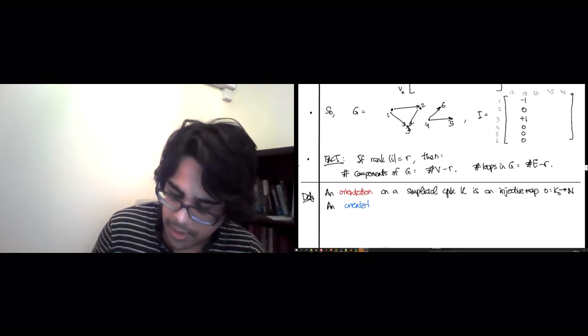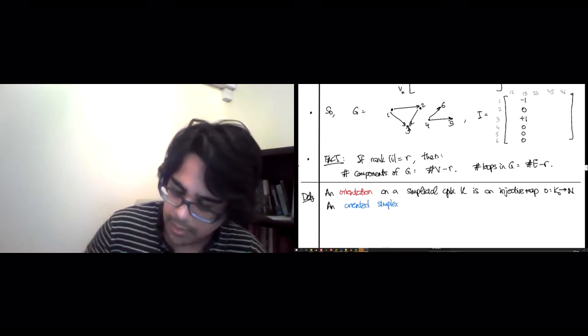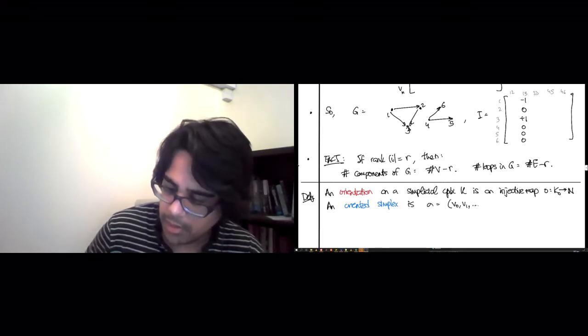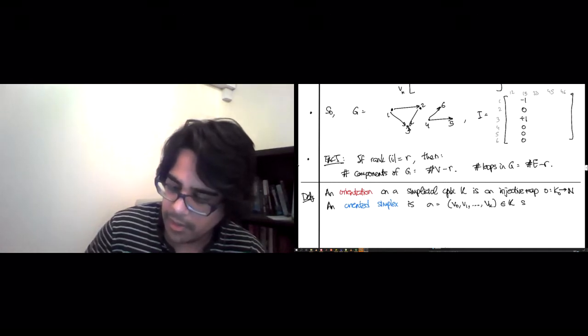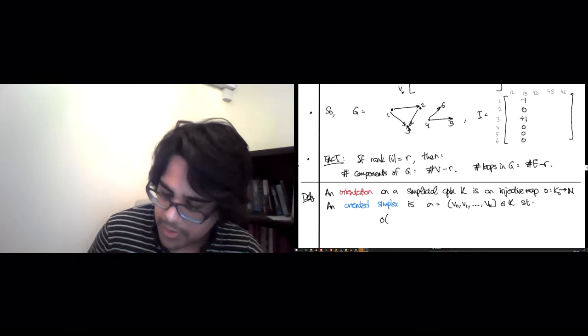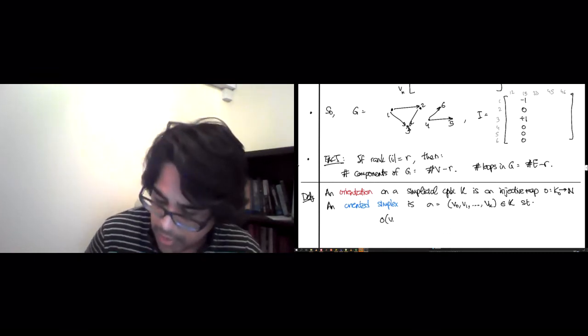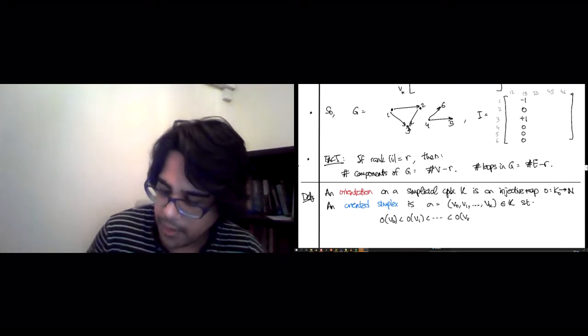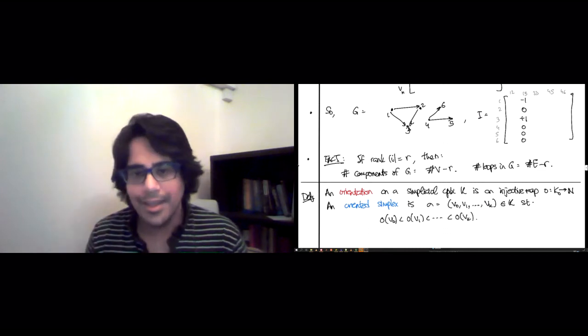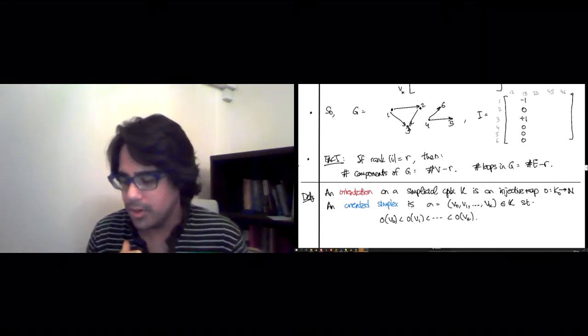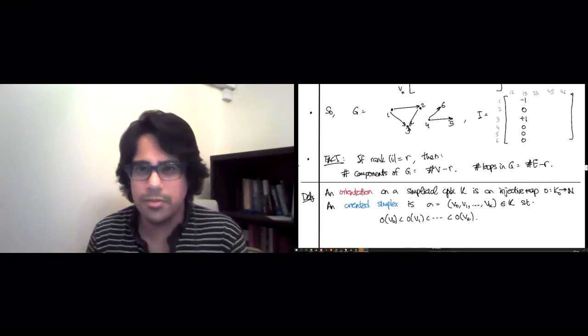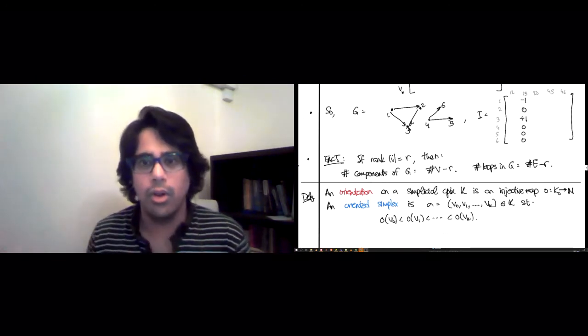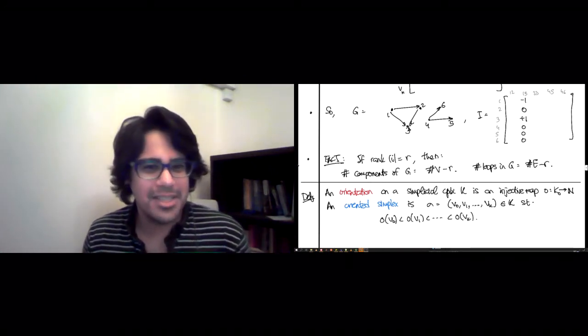And instead of writing simplices as lists, an oriented simplex is sigma equals V0, V1, blah, blah, blah, Vk in K, so that the number you've assigned with O to V0 is strictly less than the number you've assigned to V1, so on up to Vk.